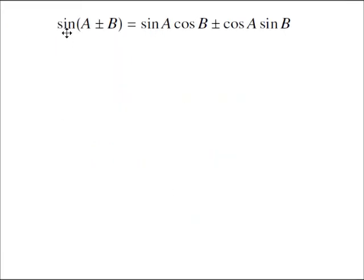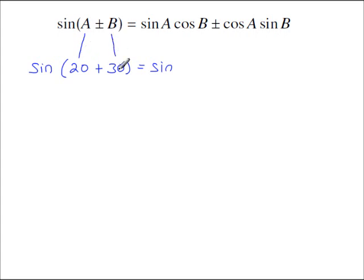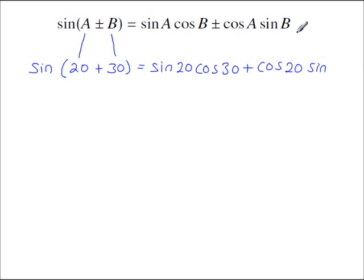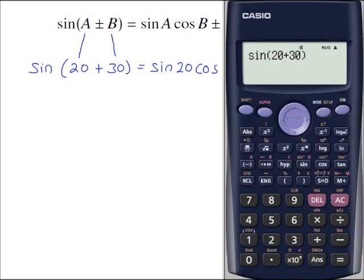The first one: sine A plus or minus B. If you have something like sine of 20 plus 30, that equals sine A cos B plus cos A sine B. So A is 20 and B is 30, giving sine 20 cos 30. If there's a plus on the top, the sign goes with that plus. Then cos 20 times sine 30. Sine of 20 plus 30 is 0.766.